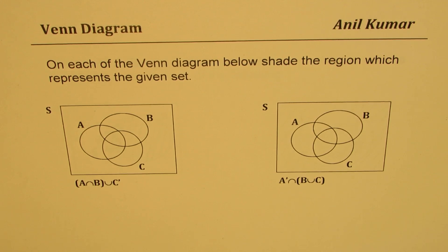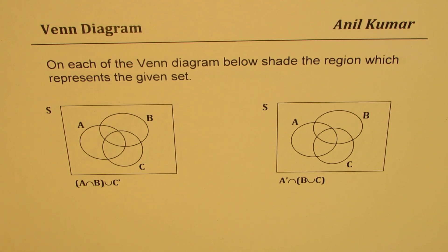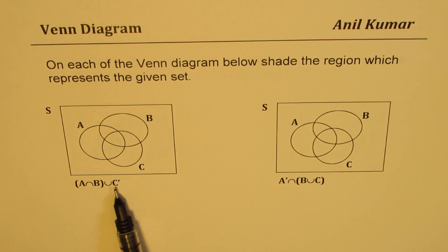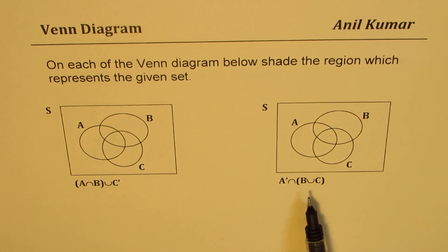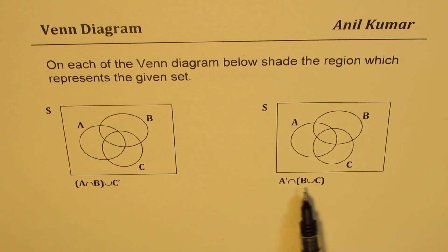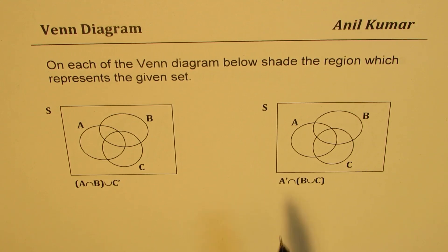I've taken up two Venn diagrams here which you need to shade. The question is: on each of the Venn diagrams below, shade the region which represents the given set. The set given is A intersection B union complement of C. The second one is complement of A intersection with union of B and C. You can pause the video, answer the question, and then look into my solutions.